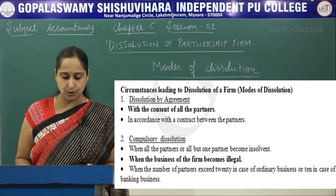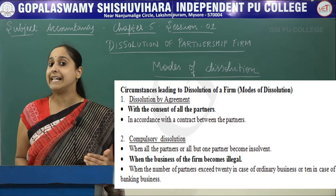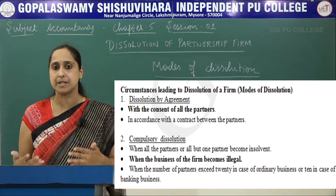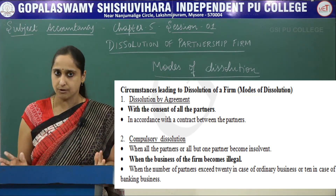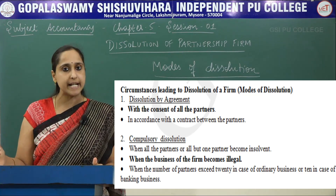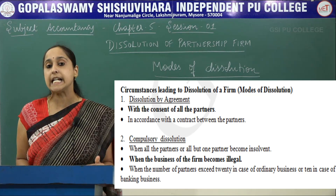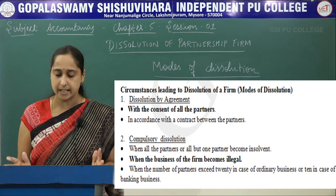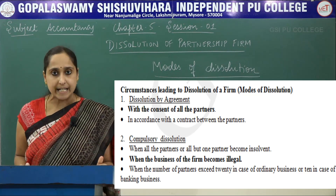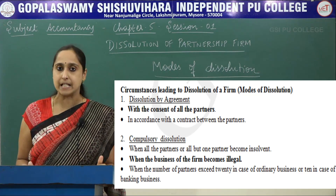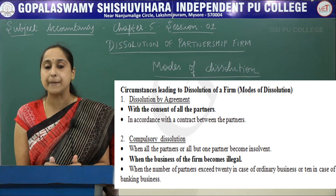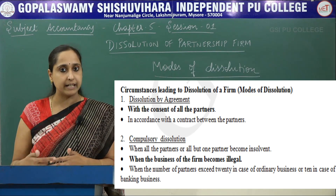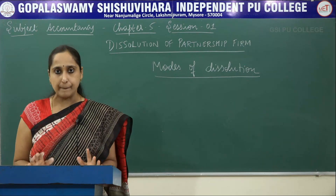Second is Compulsory Dissolution. When all the partners or one of the partners becomes insolvent — insolvency means not having enough money to pay debt, i.e., bankruptcy — it leads to compulsory dissolution. Also, when the business of the firm becomes illegal, or if they are doing any illegal activities, it leads to compulsory dissolution. When the number of partners exceeds 20 in case of ordinary business, or 10 in case of banking business, if it exceeds that particular number, it leads to compulsory dissolution.